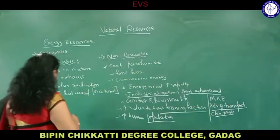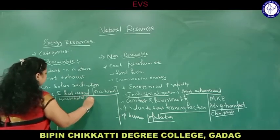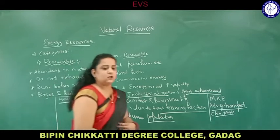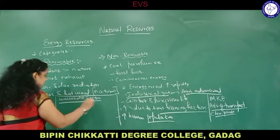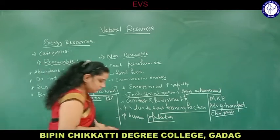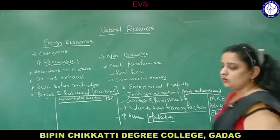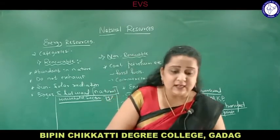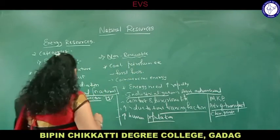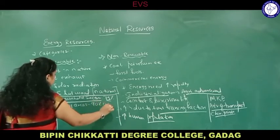If you come to the household sector — how much percent of total energy are we using? 75 percent of total energy consumption is under the household sector. Among the total energy available, 75 percent is consumed by the household sector. And in rural areas, 90 percent of it is used in cooking.